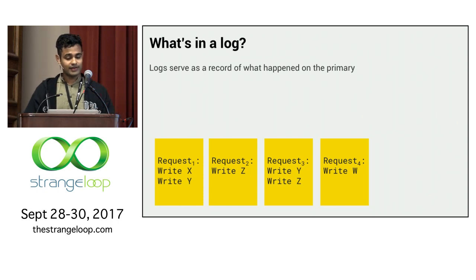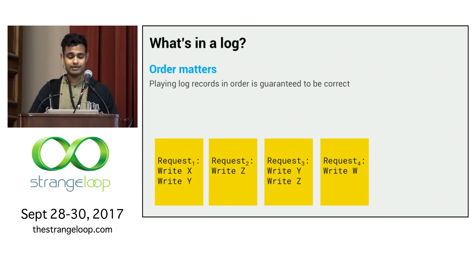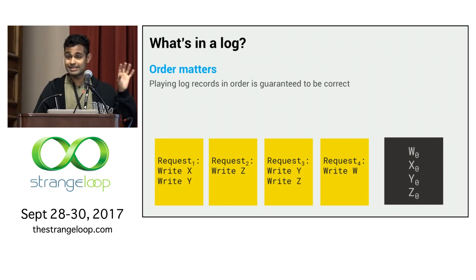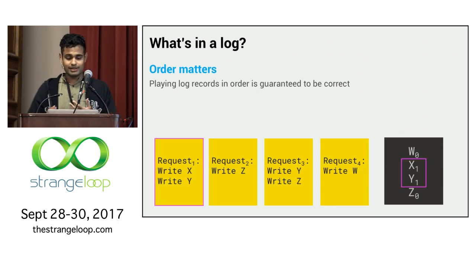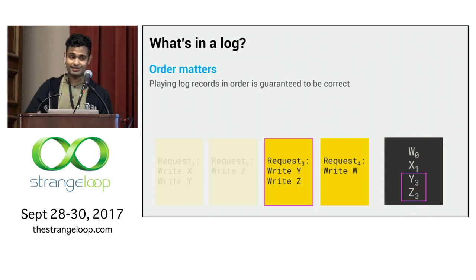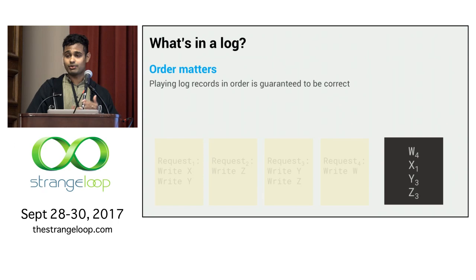Logs serve as a record of what happened on the primary. We reconstruct the primary's state by replaying this log, and the order of log records matters — playing them sequentially is always guaranteed to be correct. For example, with four sequentially ordered requests: the first updates x and y to x1, y1; the second updates z to z2; the third updates y and z to y3, z3; and the fourth updates w to w4. We end up with a consistent final state.